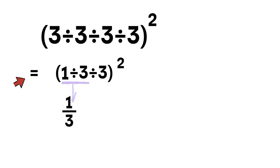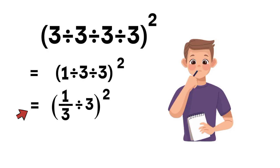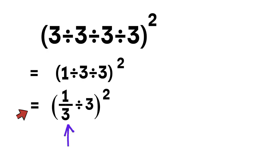Now the question looks like this: 1 third divided by 3, whole thing squared. Now, here's the tricky part. We're dividing a fraction by a normal number, and this is where the KCF rule comes in. Keep, change, flip. Let me explain it clearly.